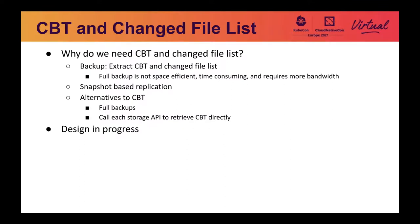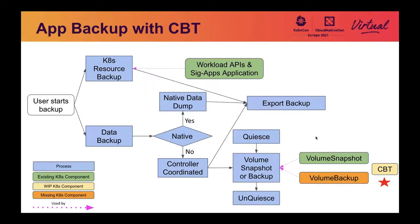The next missing building block is CBT — change block tracking — and change file lists. Without CBT, backup vendors have to do full backups all the time, which is not space efficient, takes longer to complete, and needs more bandwidth. Another use case for CBT is snapshot-based replication, where you take snapshots periodically and replicate to another site for disaster recovery. Without CBT, we can either do full backups or call each storage API individually to retrieve CBT, which is highly inefficient. We are currently working on the design for the CBT feature. The CBT box is shown in yellow as a work-in-progress component.